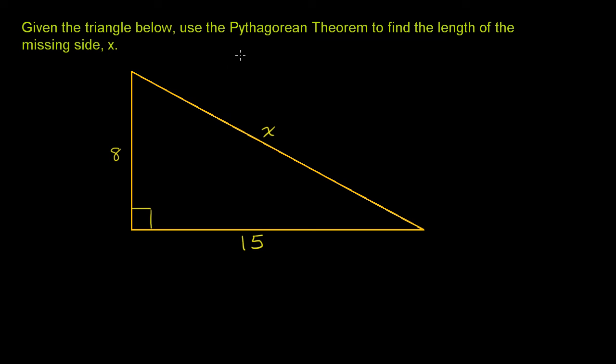Given the triangle below, use the Pythagorean theorem to find the length of the missing side x.